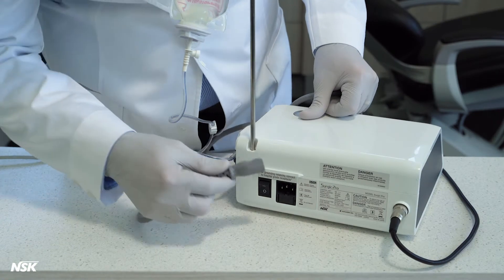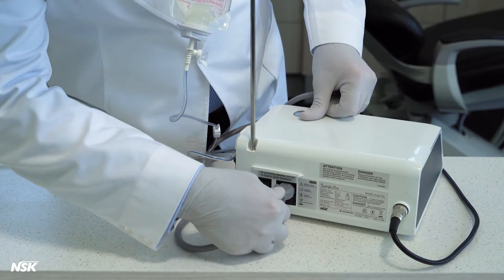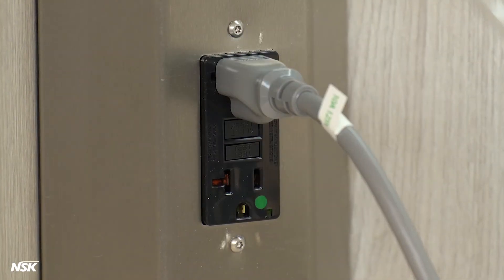Connect the AC power cord to the power socket at the back of the control unit. Then, plug into a power outlet.